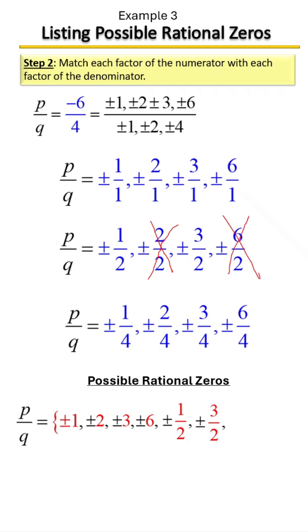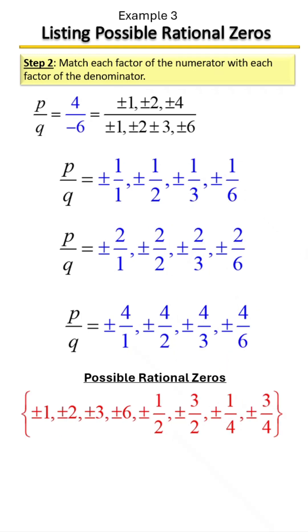Moving to the bottom, we have one fourth. It's not on our list, let's add it. Then we have two fourths. Two fourths reduces to one half, we already have that. Next we have three fourths, let's add that to our list. And then lastly we have six fourths. Six fourths reduces to three halves, which we already have on our list.